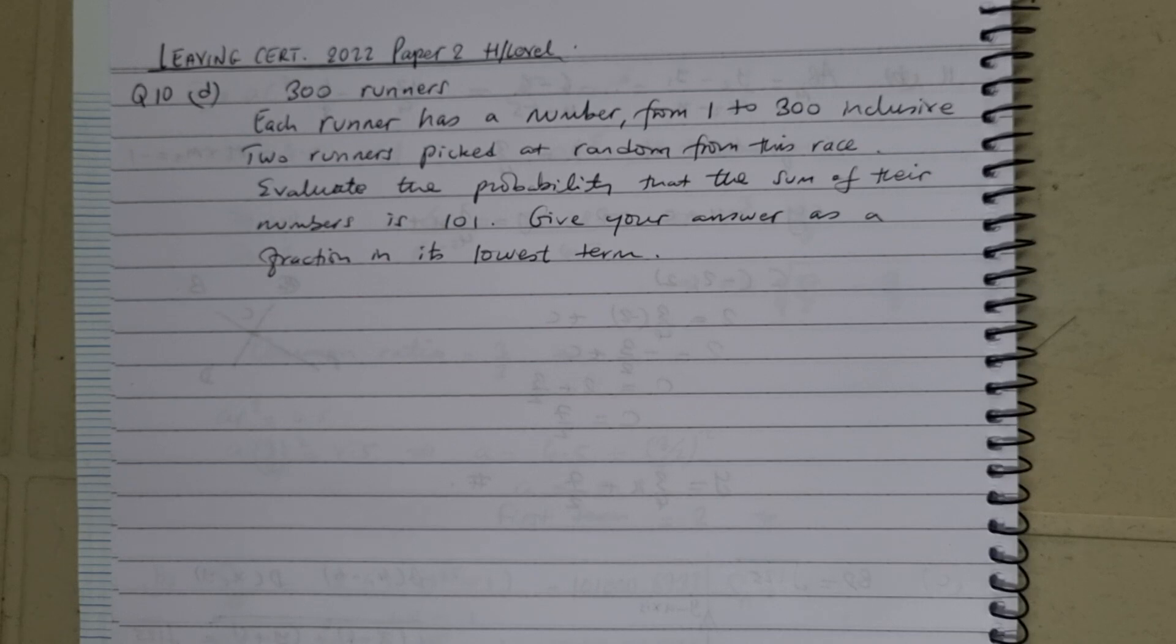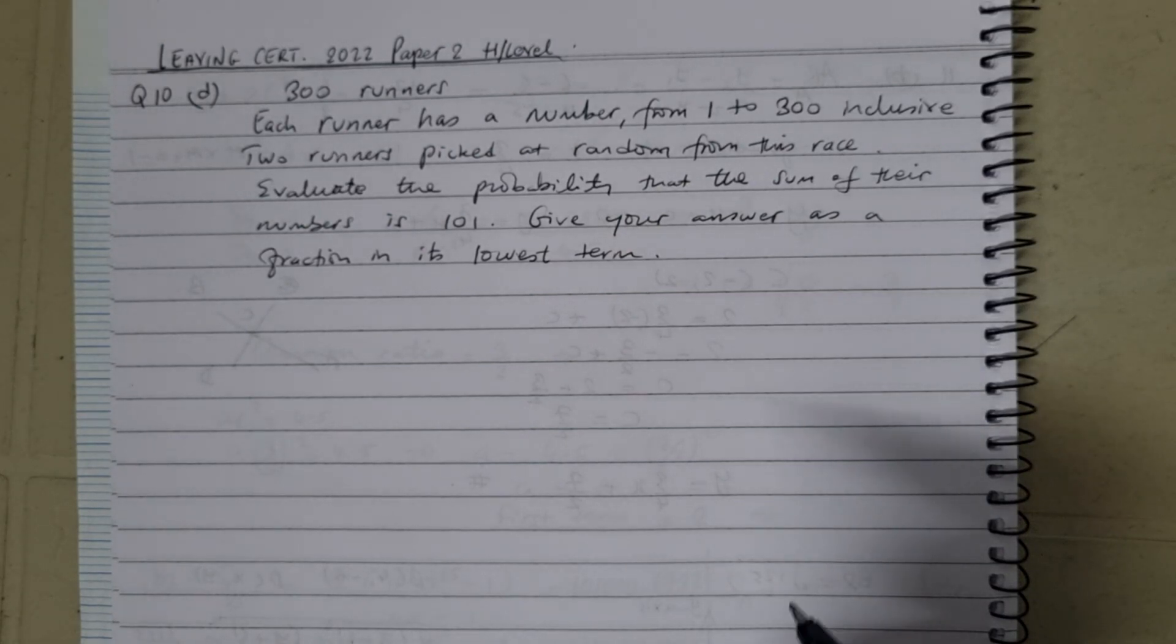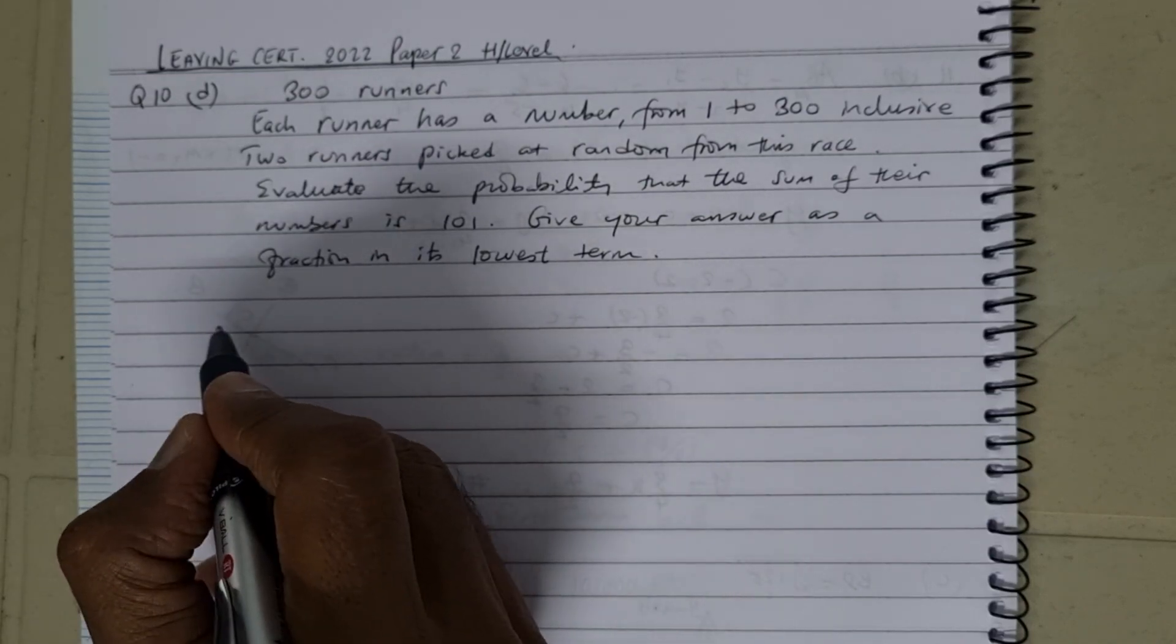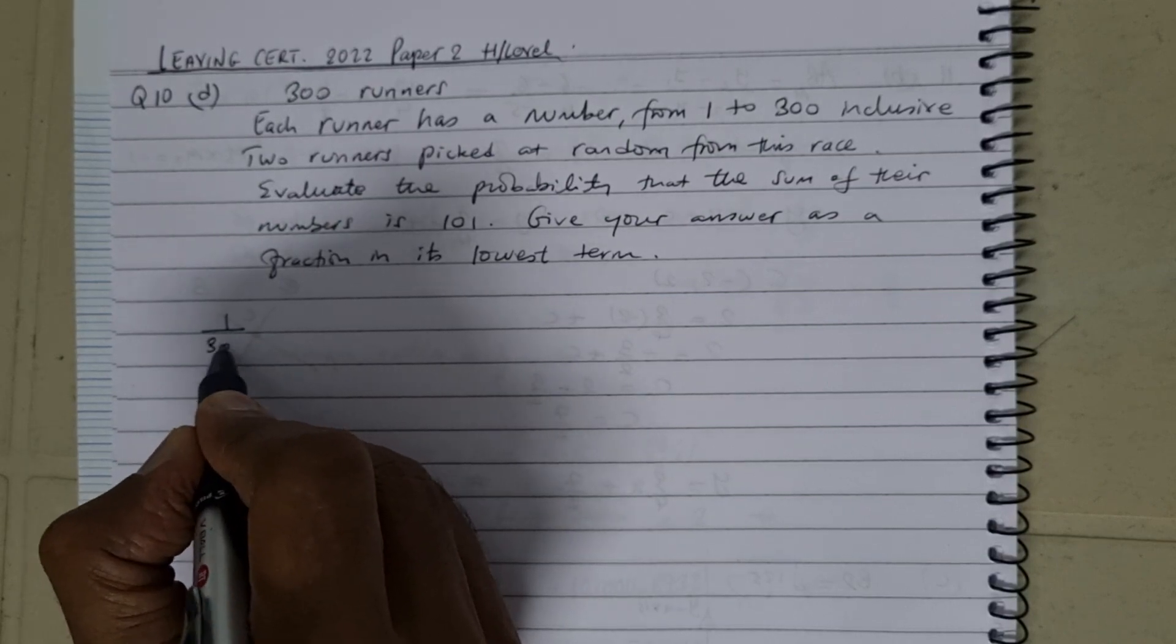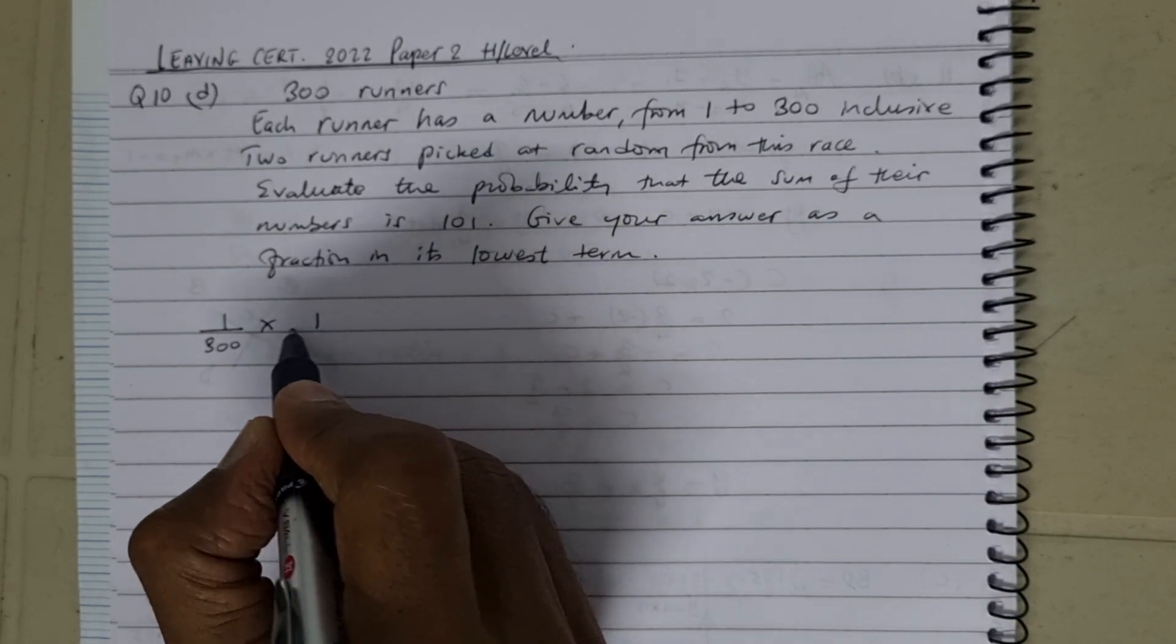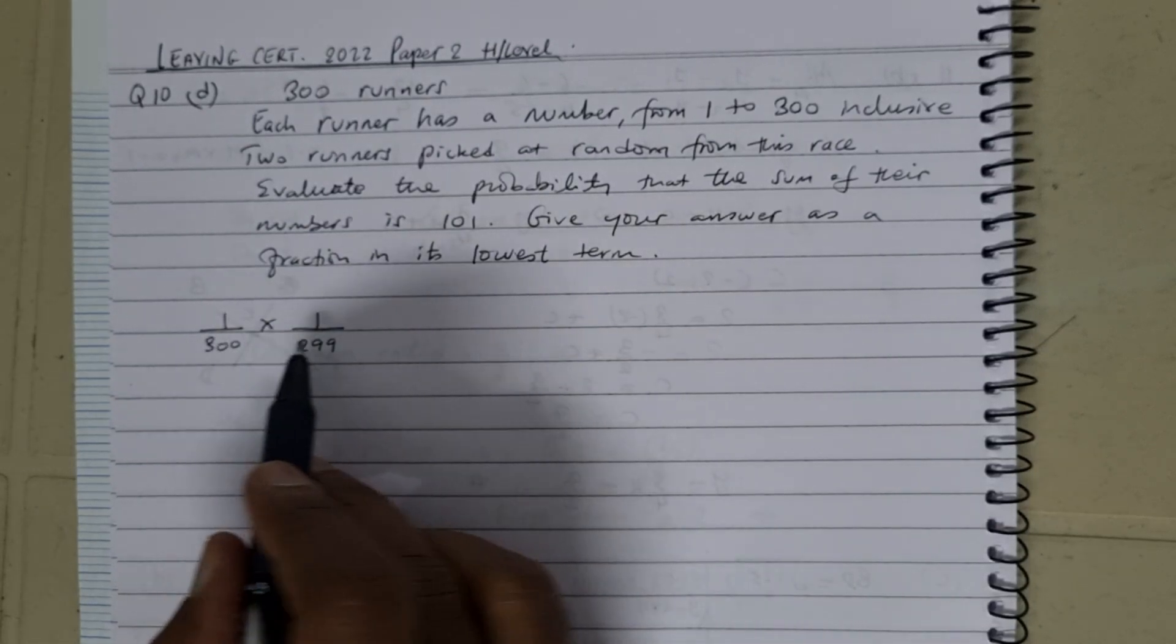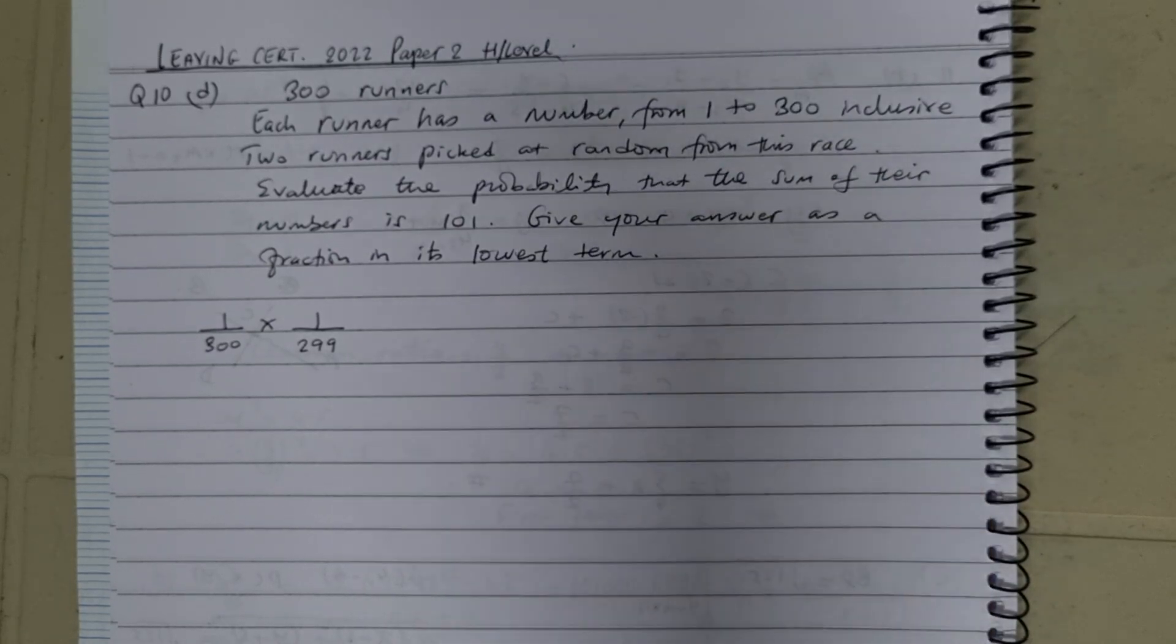First of all, if we pick one runner from the 300 runners, that's going to be 1 over 300, then multiply by the next runner, which is 1 over 299, because one has already been taken from the 300. So that's the probability we're looking for.